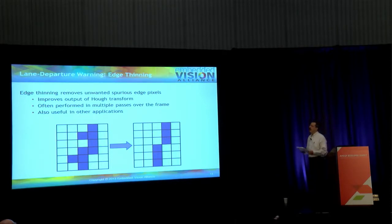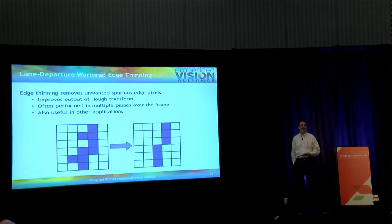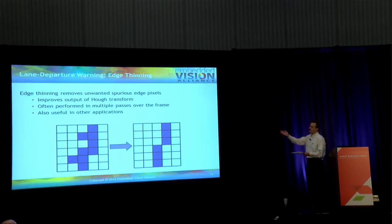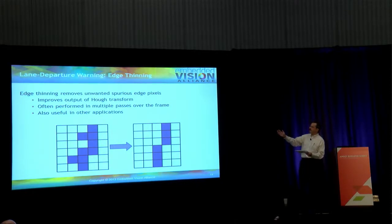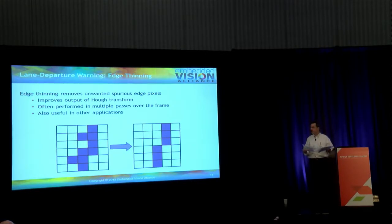After edge detection, a common next step is edge thinning — clean up the edges and make them as simple as possible, which makes life easier for the next step. This is a binary morphology kind of operation working on a binary image where pixels are on or off. It looks at the geometric characteristics of clusters of pixels to decide whether to eliminate certain pixels to create a cleaner edge. This is an algorithm that is not particularly amenable to a data-parallel implementation like a GPU because of lots of local compute operations.